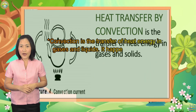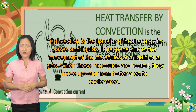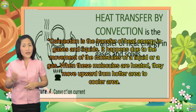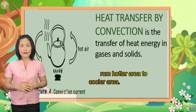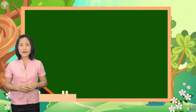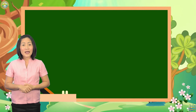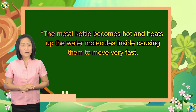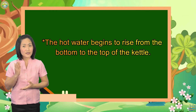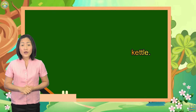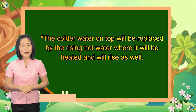Convection is the transfer of heat energy in gases and liquids. It happens due to the movement of the molecules of a liquid or gas. When these molecules are heated, they move upward from a hotter area to a cooler area. To understand this better, let's examine the heat transfer through boiling water in a kettle on a stove. The metal kettle becomes hot and heats up the water molecules inside, causing them to move very fast. The hot water begins to rise from the bottom to the top of the kettle. The colder water on top will be replaced by the rising hot water, where it will be heated and will rise as well.